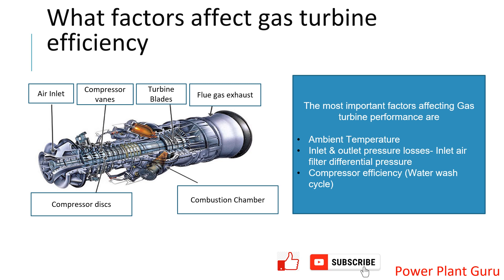We will start gaining some knowledge about gas turbine efficiency and heat rate. There are various factors where gas turbine performance may vary, such as ambient temperature, inlet and outlet air pressure drops, compressor efficiency, humidity, and altitude. There are many factors, but we will take only a few which are very important and going to impact gas turbine efficiency and output in a big way. The first one is ambient temperature.